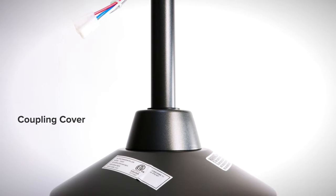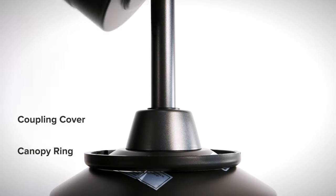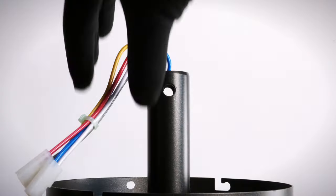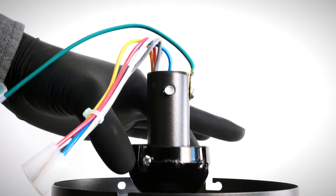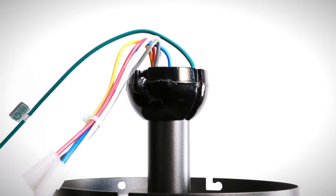Slide the coupling cover, canopy ring, and canopy over the downrod. Reinstall the hanger ball, being sure to secure the ground lead. Insert the cross pin and tighten the set screw against the side of the downrod.